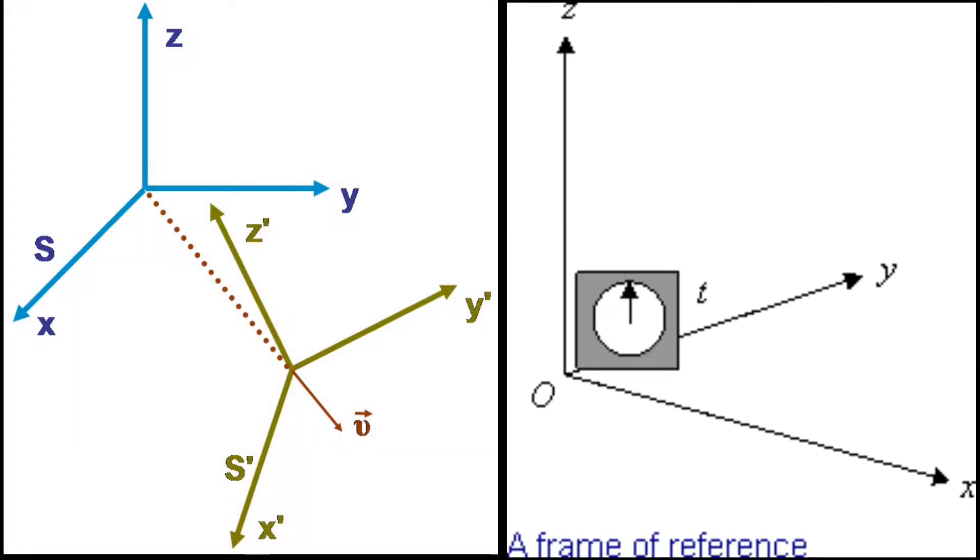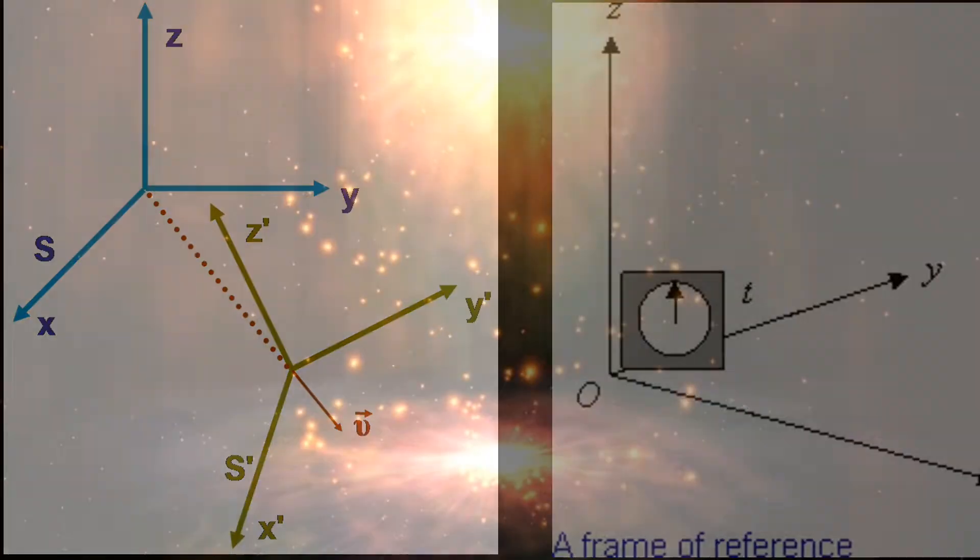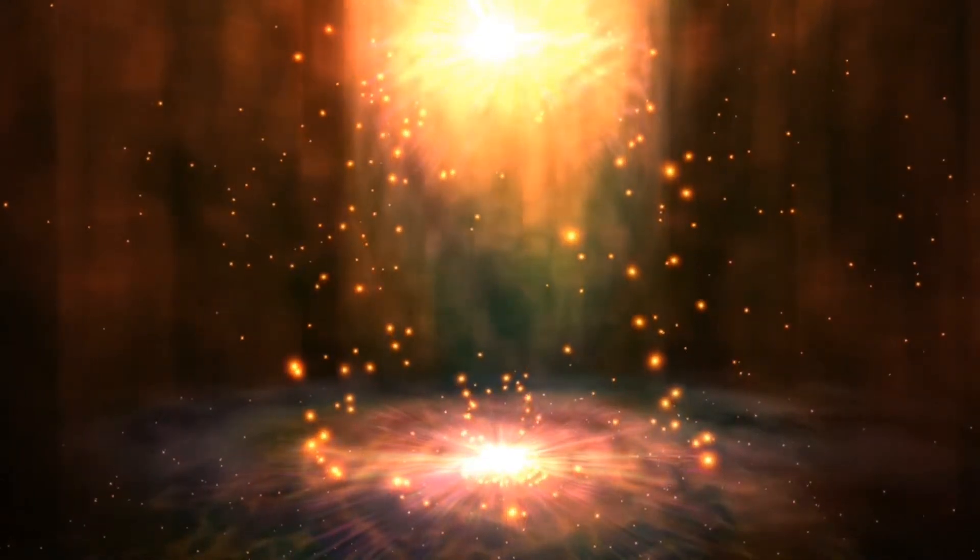An inertial reference frame can be described as a three-dimensional coordinate system that is either stationary or in uniform linear motion, that is, it is not accelerating or rotating. He found that motion within such an inertial reference frame could be described by three simple laws.